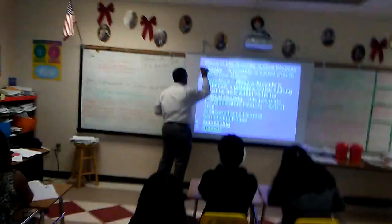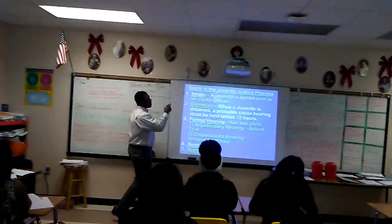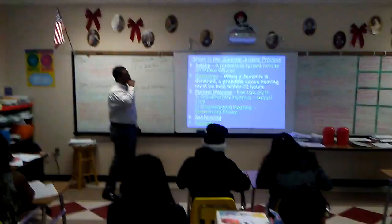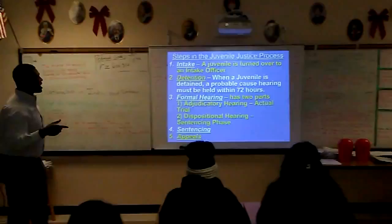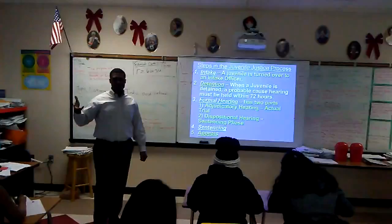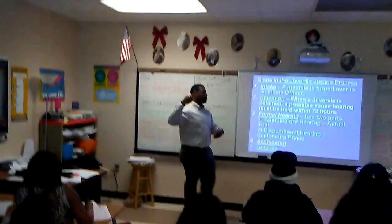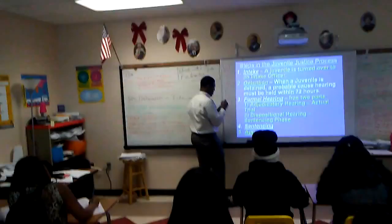Now we're going to be talking about the actual juvenile justice process. First is the intake — a juvenile is turned over to an intake officer. Let's say you committed truancy and left for five weeks; they're going to come to wherever you are and take you in. Second is the detention — when a juvenile is detained, a probable cause hearing must be held within 72 hours, which is three days.